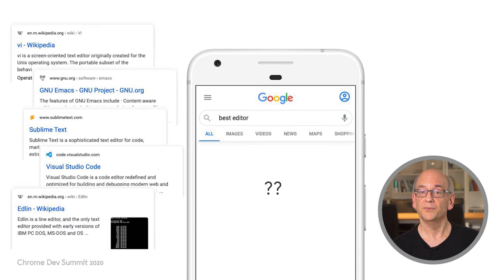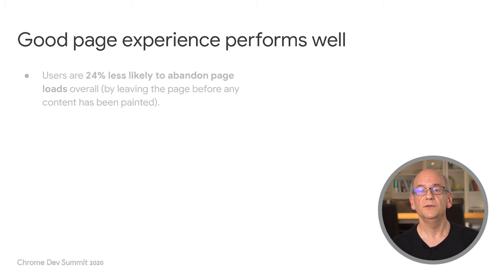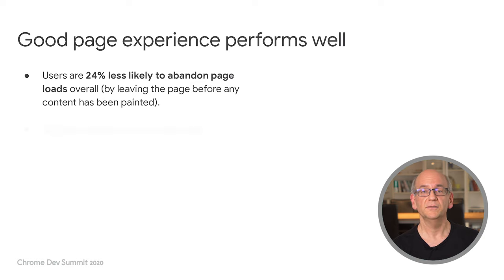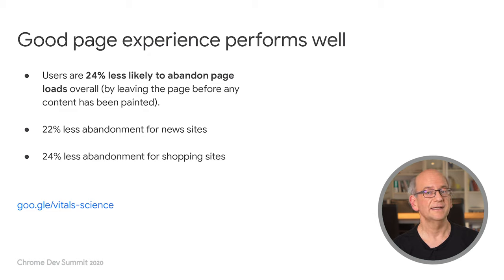In cases where there are multiple pages that have similar content, page experience becomes much more important for visibility in search. It's not the only factor, and of course there's much more to a website than just search. We found that when a site provides a good page experience, it generally performs well with users too. For example, we found users are 24% less likely to abandon page loads overall. In particular, we saw 22% less abandonment for news sites and 24% less abandonment for shopping sites. There are few changes that can show this level of improvement for online businesses, and results like these are part of the reason we prioritize the Web Vitals metrics.